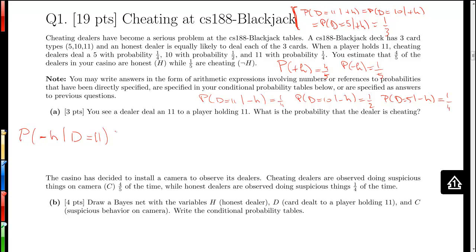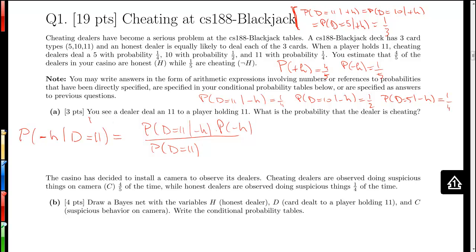What we're interested in is the quantity: the probability of having a not-honest dealer, given that we saw that dealer deal an 11 to somebody already holding 11. Capital D here stands for dealing a card when somebody already holds an 11. That's not a quantity we're directly given — we're given quantities of the reverse type, the probability of dealing a particular card given honest or dishonest. So this is a typical setting where we apply Bayes' rule.